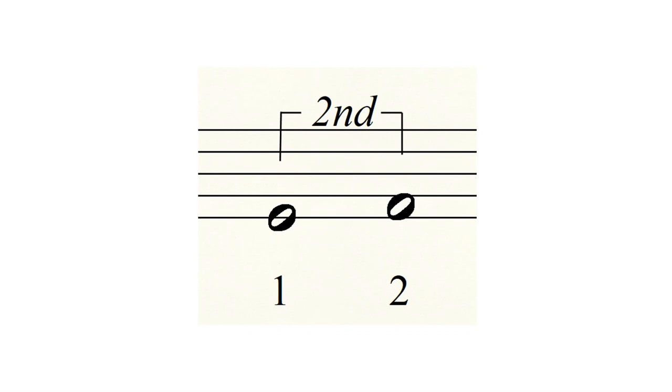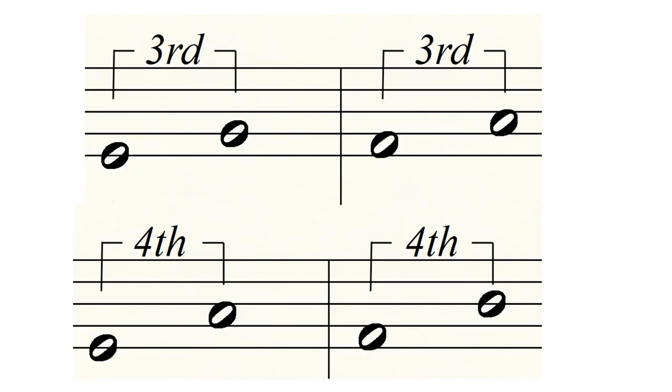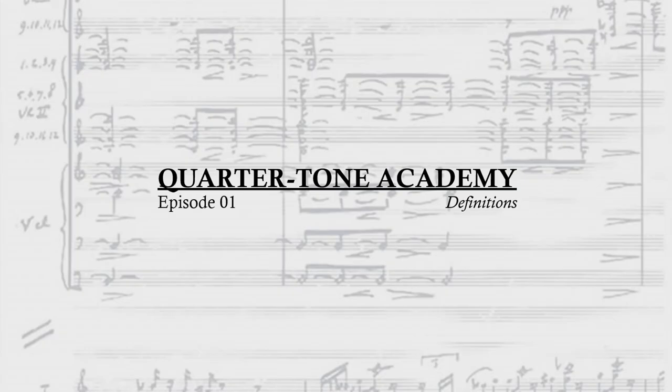So we would call this interval a second. Thirds look like a line jumping to another line or space to a space with one note in between them. Fourths look like a second except there's also another space or line sandwiched between the notes. Fifths jump two lines or spaces. Intervals can theoretically go on forever and you could have a 78th or 150th interval if you wanted, although notation would probably get a bit taxing at such extremes.